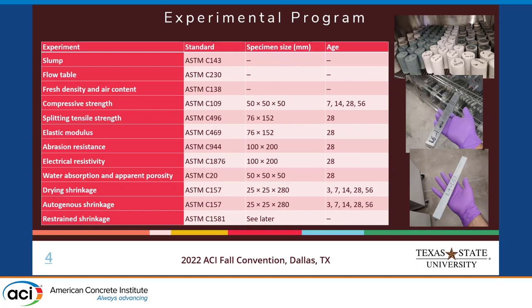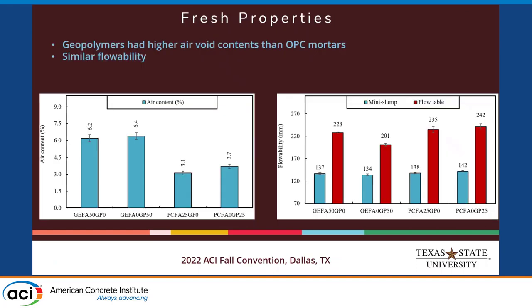Marab did a lot of tests. He did a slump test, flow table test, and also looked at air content and density. He did a lot of mechanical tests including compressive strength, split tensile strength, and elastic modulus. He also looked at some durability perspectives such as abrasion resistance and electrical resistivity. And finally, we did a shrinkage test — both free shrinkage and autogenous shrinkage — and also a ring test to evaluate the cracking potential of the mortar under restrained drying.